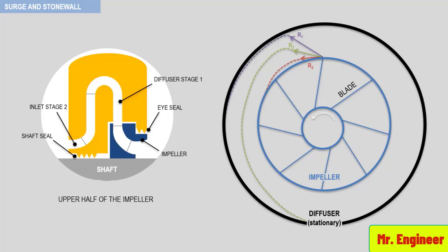Stall can be initiated by flow separation at any point within the compressor stage: in the inlet, midsection, or the discharge. Regardless of the location of the flow separation within the compressor stage, a reduction in head produced by the impeller will occur.